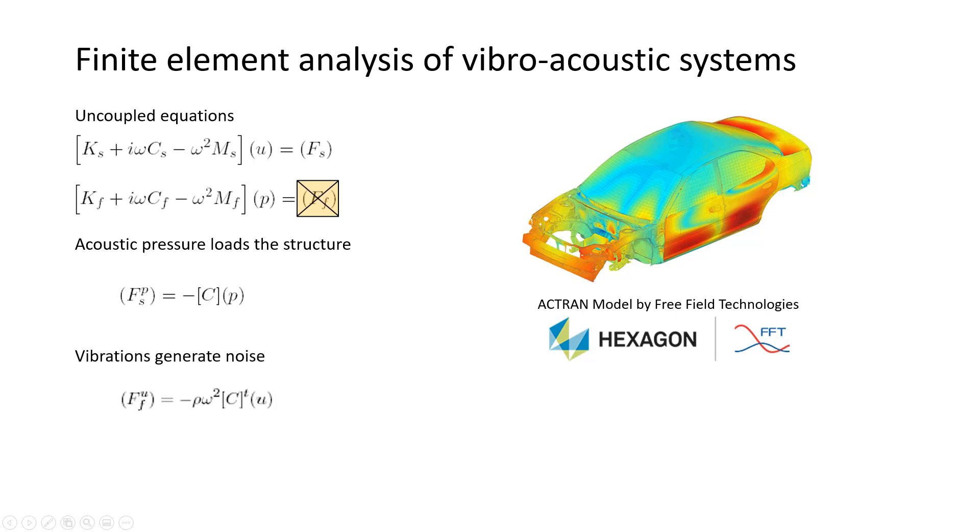But we also know that vibrations are generating noise. And so there must be some kind of acoustical excitation, which is proportional to the amplitude of the displacement vector at the interface between the structural mesh and the acoustic finite element mesh. And trust me, this additional force vector is equal to rho omega squared times the transpose of the coupling matrix times the displacement.